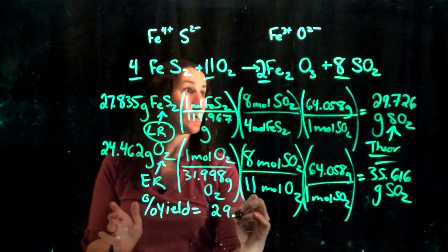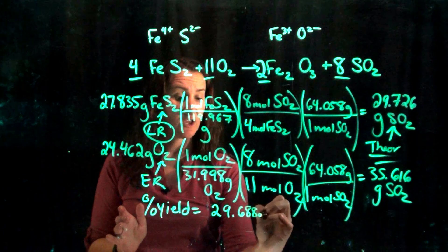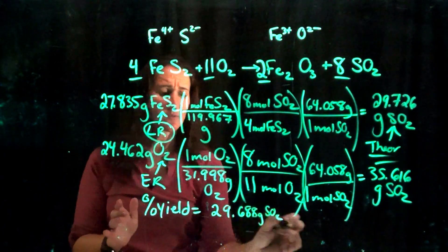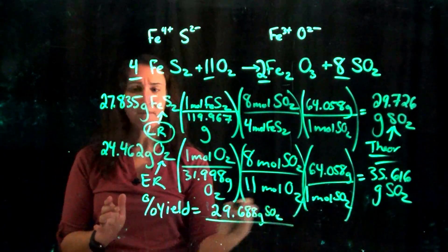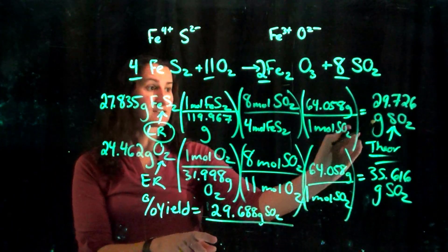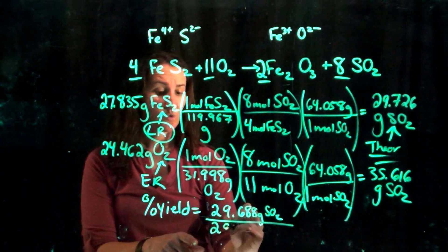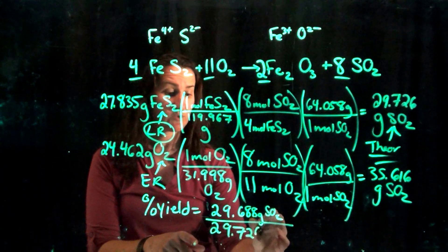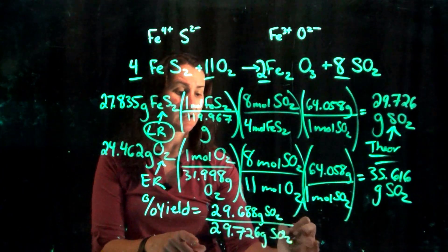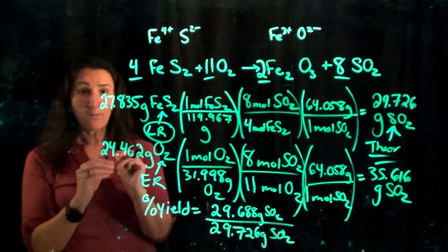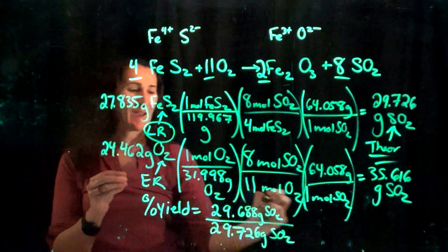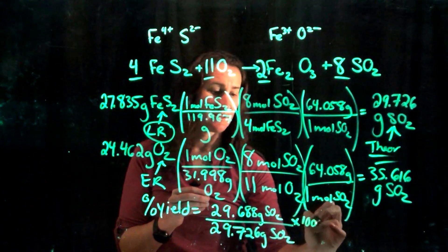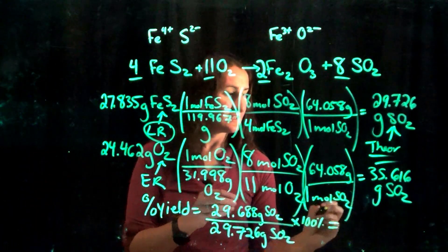And that comes from our problem so we have 29.688 grams of sulfur dioxide, and I always write it out because that'll tell me if I messed up. Meaning that was grams of sulfur dioxide, I'm comparing it here to 29.726 grams of sulfur dioxide. If your units there at the end don't match, then you screwed something up. Times 100 with units of percent to give us a total final percent yield of 99.872 percent.